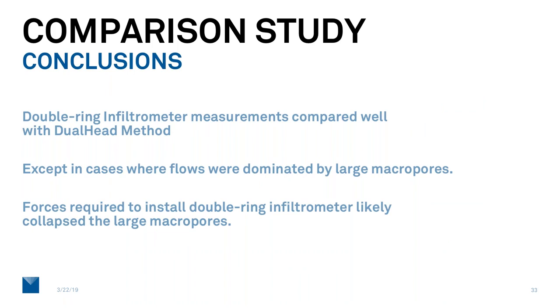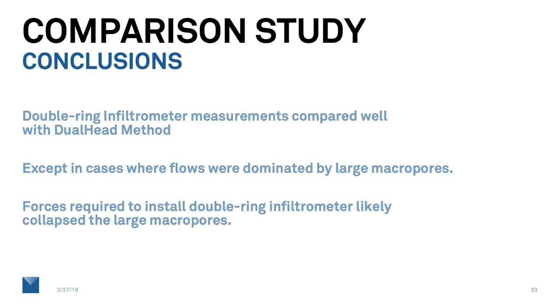So in general, we think that the double ring and the SATURO or dual head method compared well, except in those cases where flow was obviously dominated by large macropores. We think probably in the installation of the double ring, that causes a lot more disturbance and the macropores there were damaged as we did the installation. So I hope that gives you a feeling for how the SATURO works, how the dual head infiltrometer works, and gives you a feeling for opportunities where that can be applied to hydraulic conductivity measurements. Thank you.